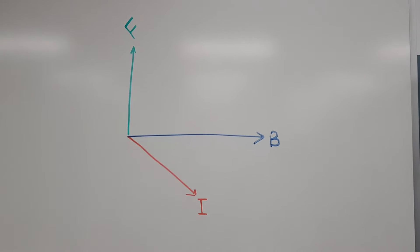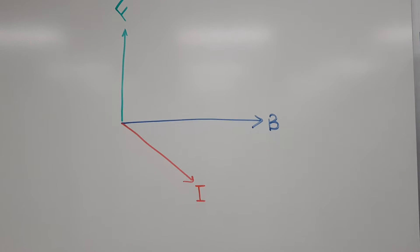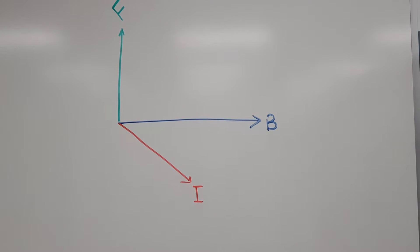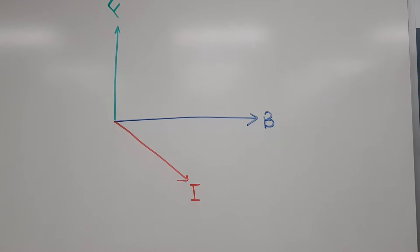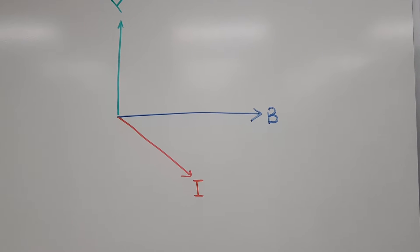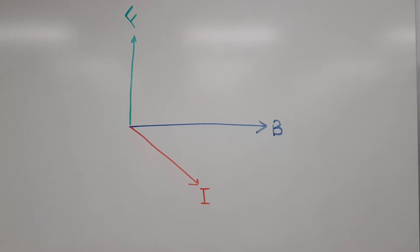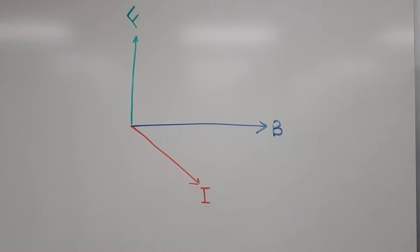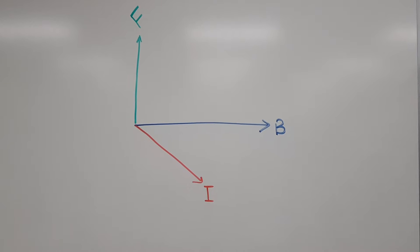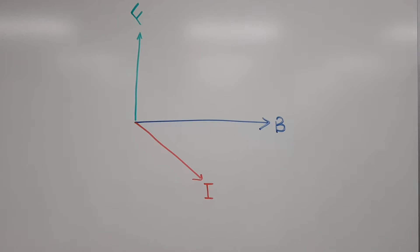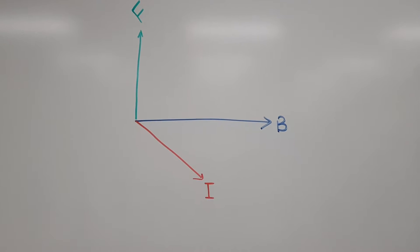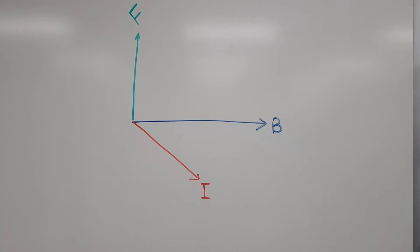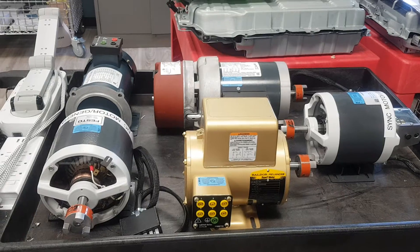In any motor, regardless if it's a DC motor or an AC motor, there are two important parameters that should exist. You have to have the magnetic field B and you have to have the current I. When these two exist, then you will have the force. How these motors are different from each other is basically based on how the B is produced and where it is produced.